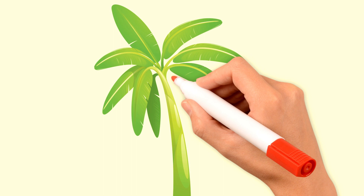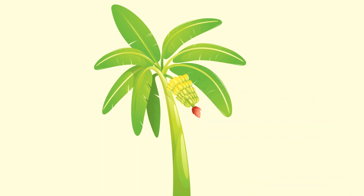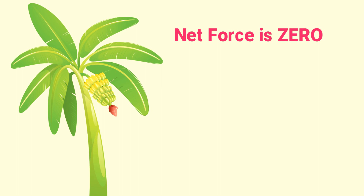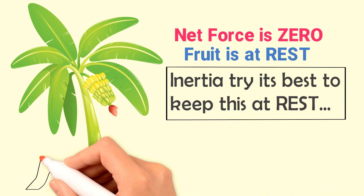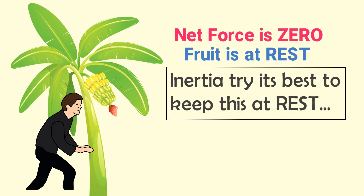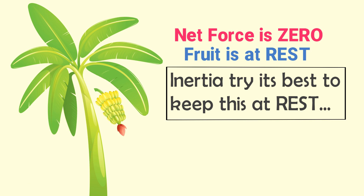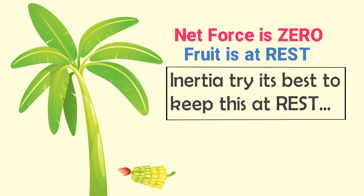When you shake a tree, fruits usually fall down. Initially, the fruit is at rest because the downward force of the earth and the upward force of the leaf stick are equal. Thus, the net external force on this fruit is zero, and that is why the fruit is at rest. The inertia of this fruit tries its best to keep it at rest. When you shake the tree, it disturbs the net external force on the fruit. Since the net external force is no longer balanced, the fruit separates from the tree. Then the downward force of the earth pulls the fruit towards the earth's center, and it falls down.